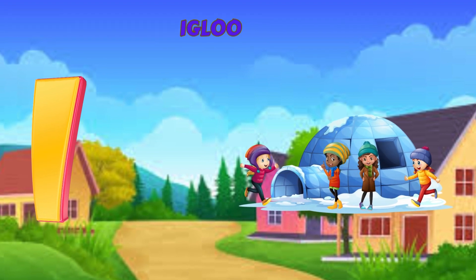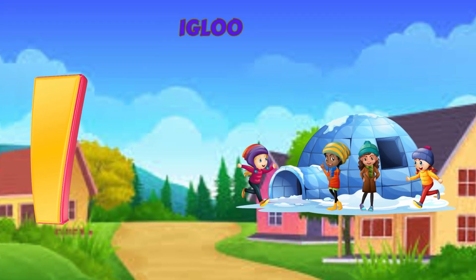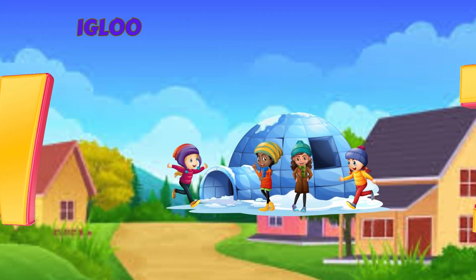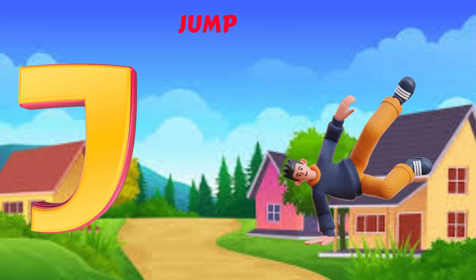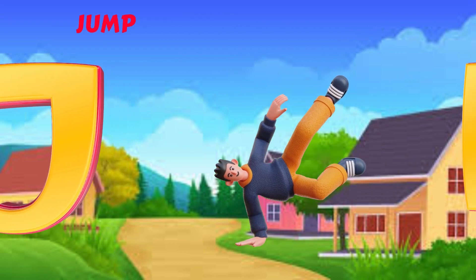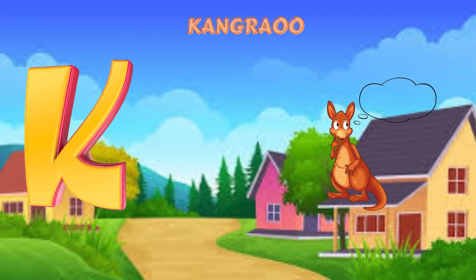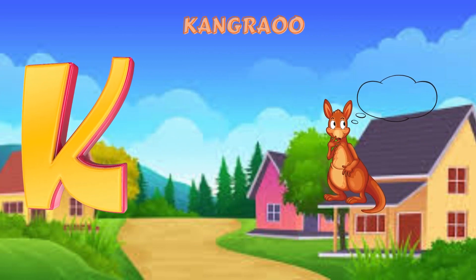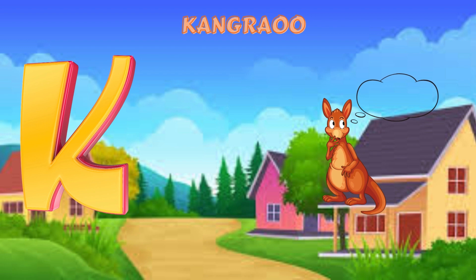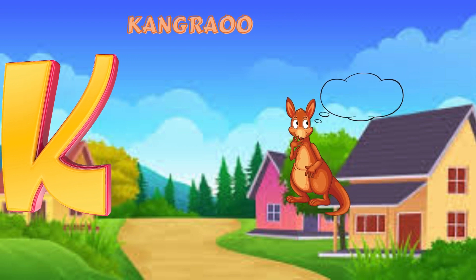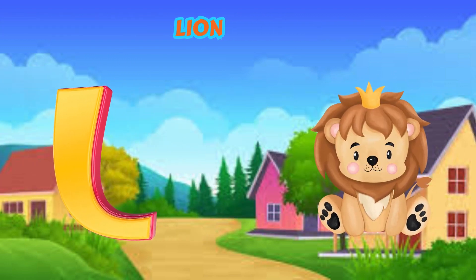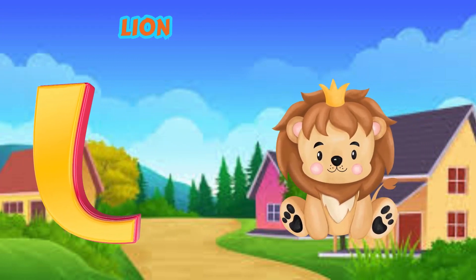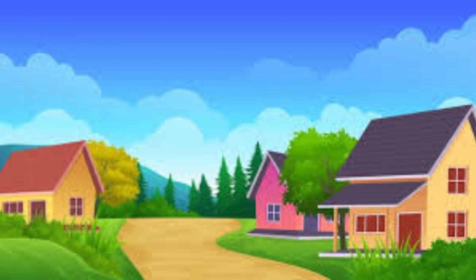I is for Igloo, I-I-Igloo. J is for Jump, J-J-Jump. K is for Kangaroo, K-K-Kangaroo. L is for Lion, L-L-Lion.